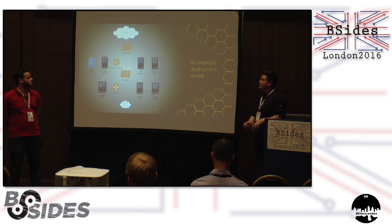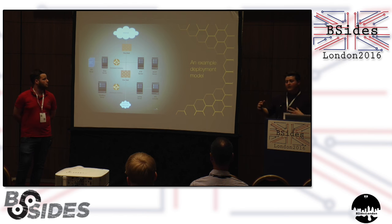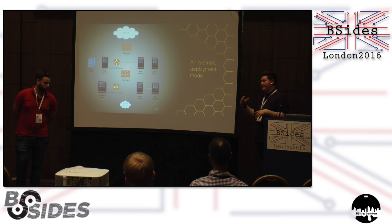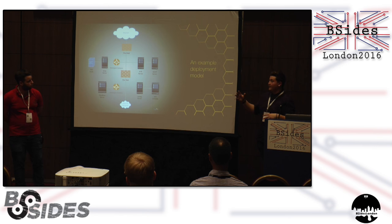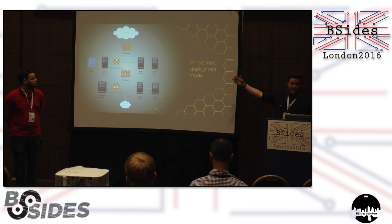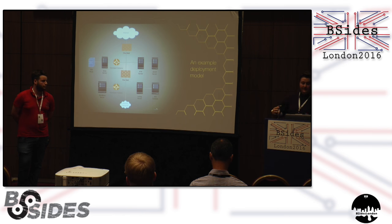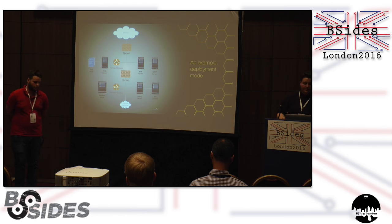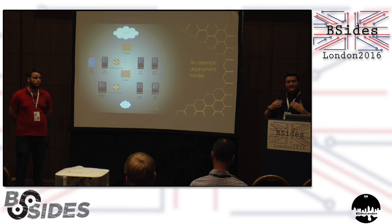As an example deployment model — although it's different for various specimens of honeypots — for ours, we thought the first instance would be better in the DMZ layer at the top, below the first firewall. This is obviously in line with your IDS nodes, your SNORT nodes, web servers, FTP servers, et cetera. This is for the first line of defense.